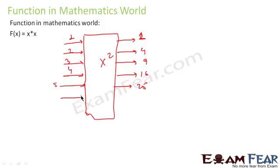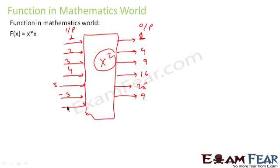Similarly, if you give a negative number — for example, minus 3 — then (−3)² = 9. If you give minus 2 as input, (−2)² = 4. This is a typical example of a function in the mathematics world: whatever input you give, it squares the input and gives you the output.